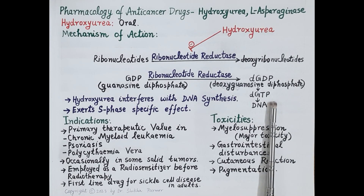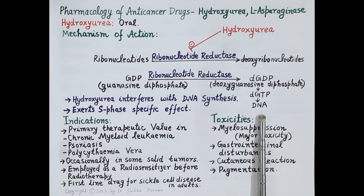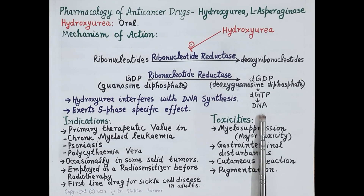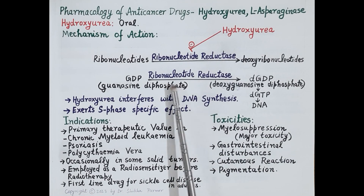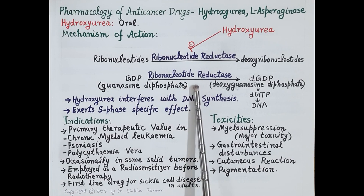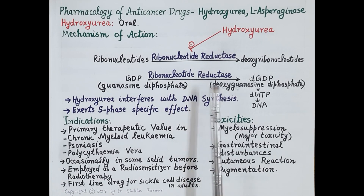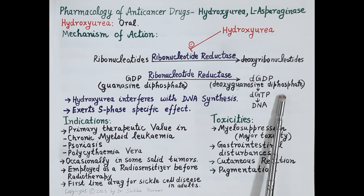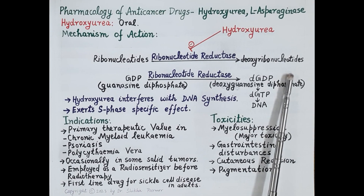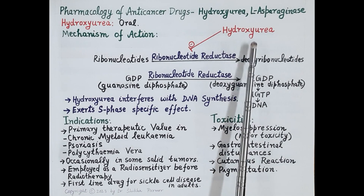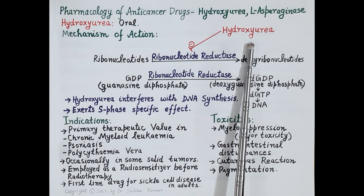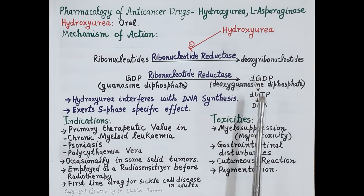Deoxyguanosine triphosphate is the nucleotide used for DNA synthesis. So hydroxyurea, by inhibiting the enzyme ribonucleotide reductase, prevents the synthesis of deoxyribonucleotides required for DNA synthesis, and thus interferes with DNA synthesis. This makes it an S-phase specific anti-cancer drug.